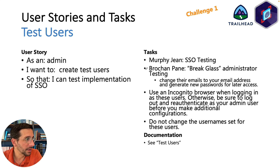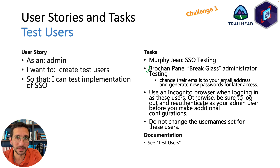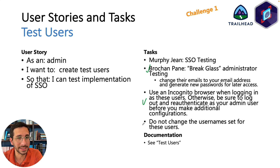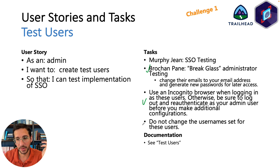For the tasks, Murphy Gene, SSO testing, Brochan Pain, and Break Glass are your test users. You're going to generate emails for both of these people, set them to your email address, and then create new passwords for later access. You should use an incognito web browser when logging in, otherwise you'll get logged in twice and that's going to be confusing. Do not change the usernames set for these users because those usernames are what the challenge is actually checking.